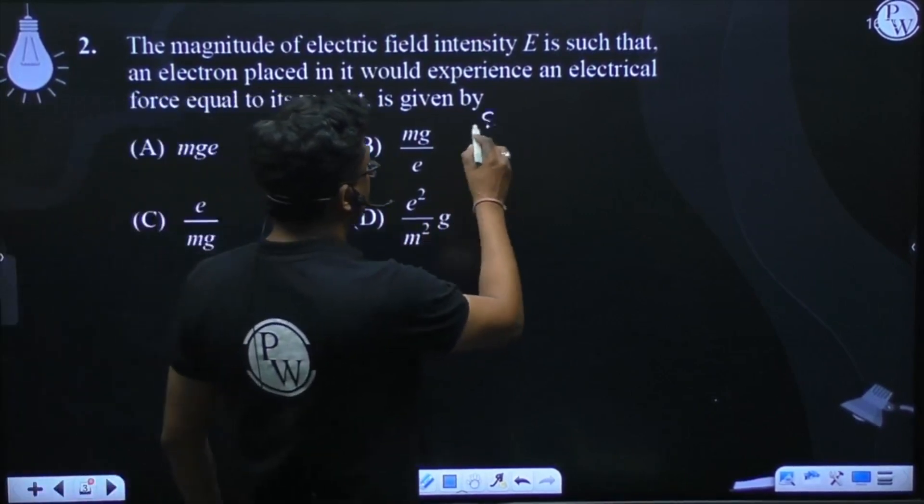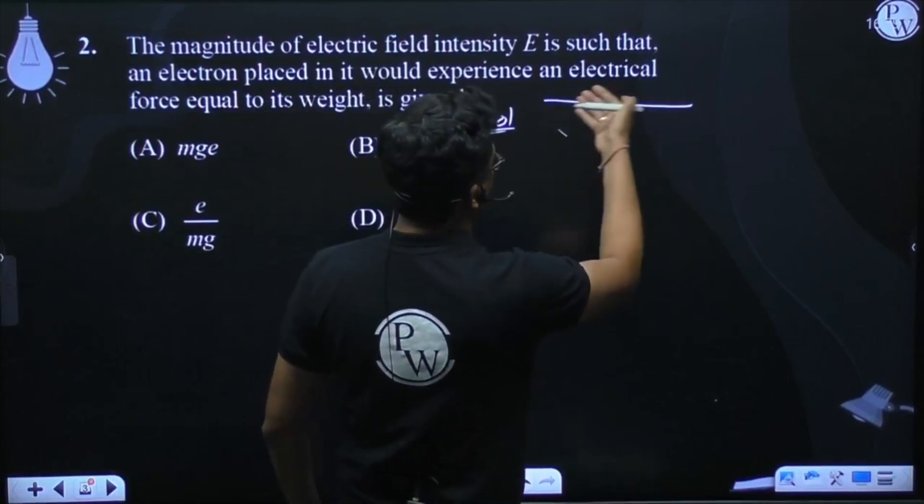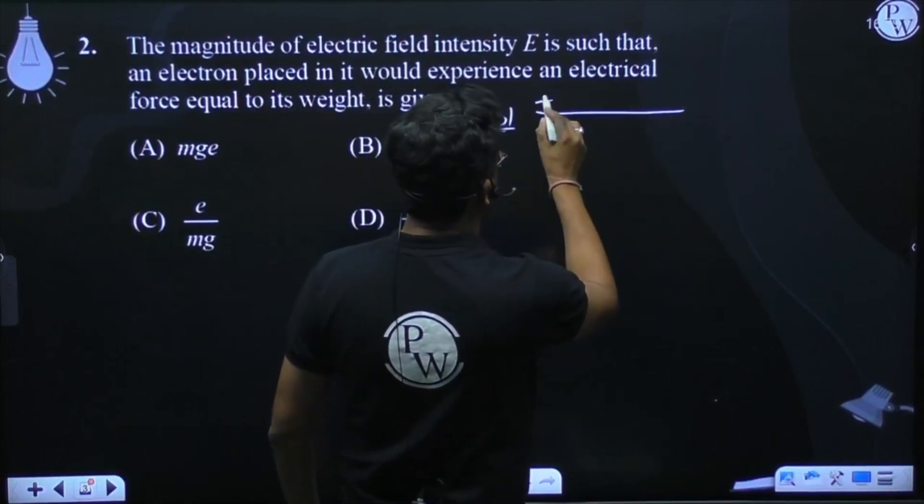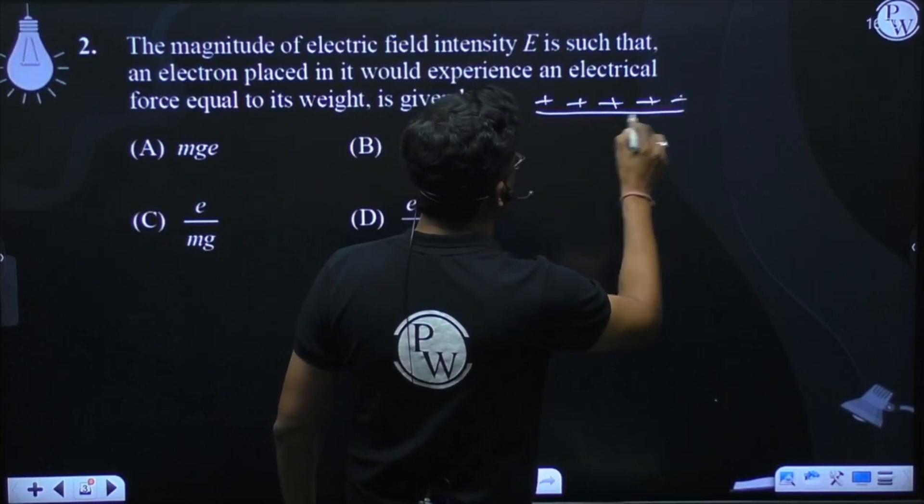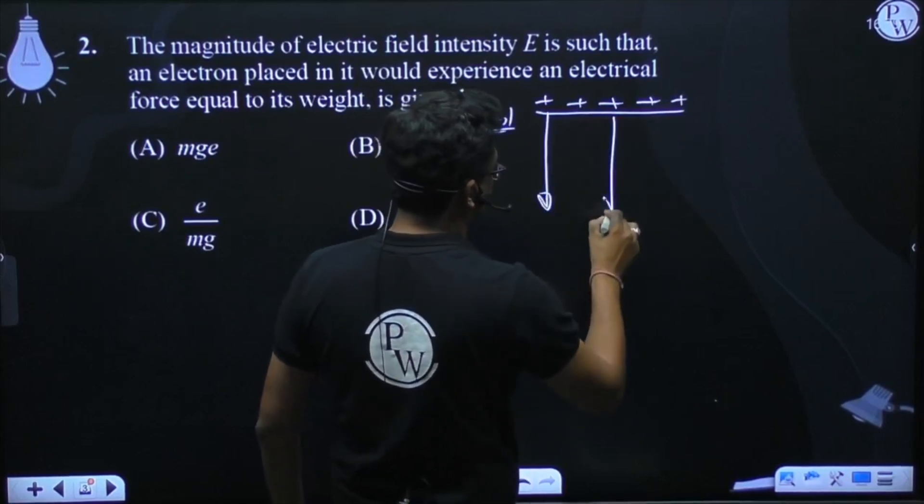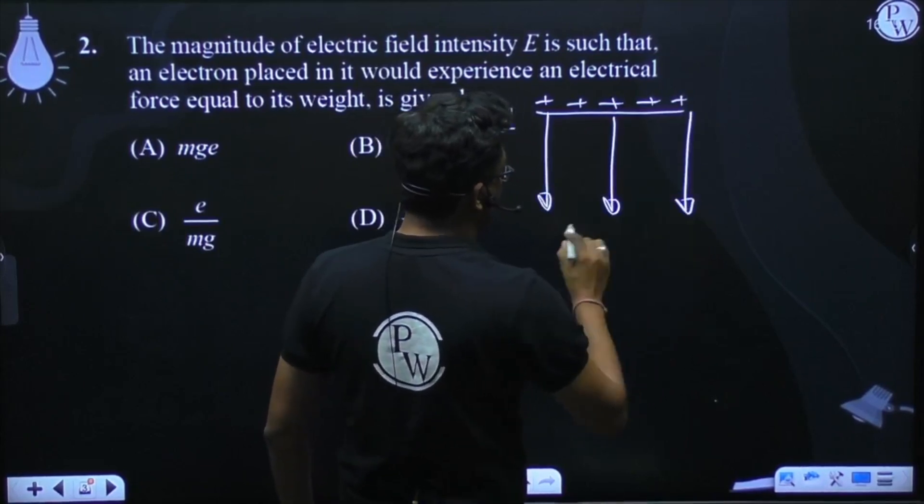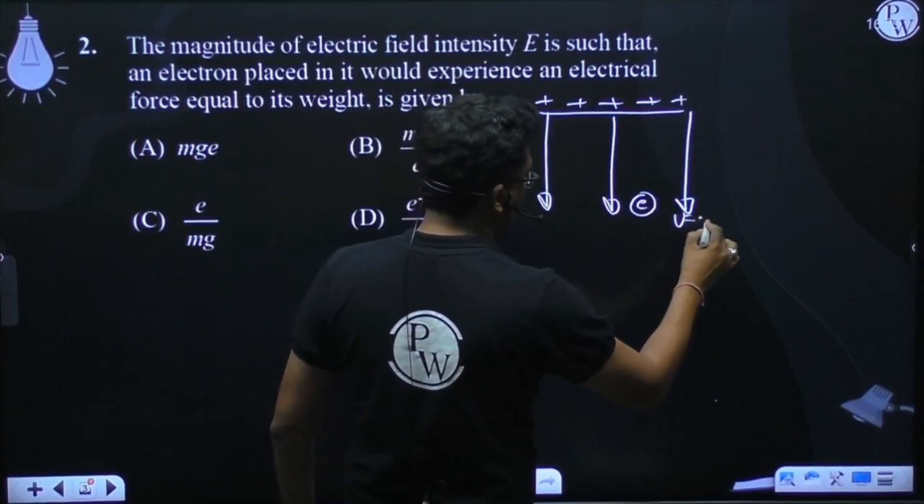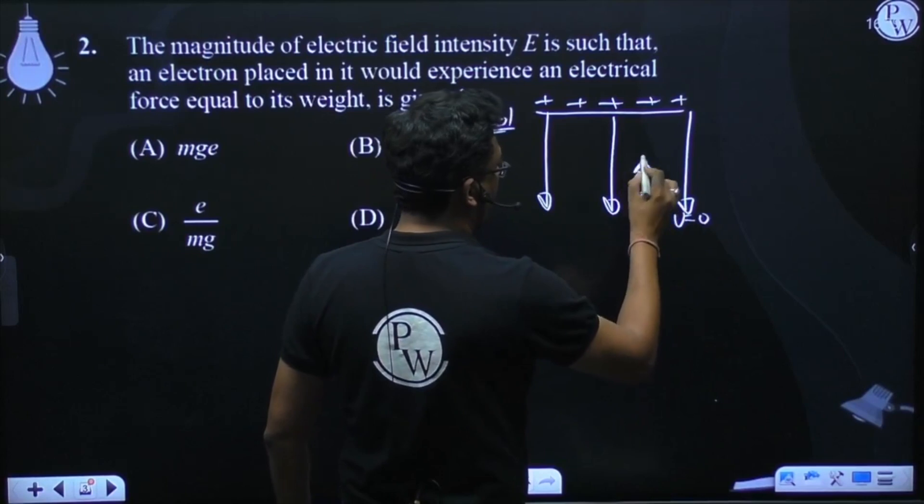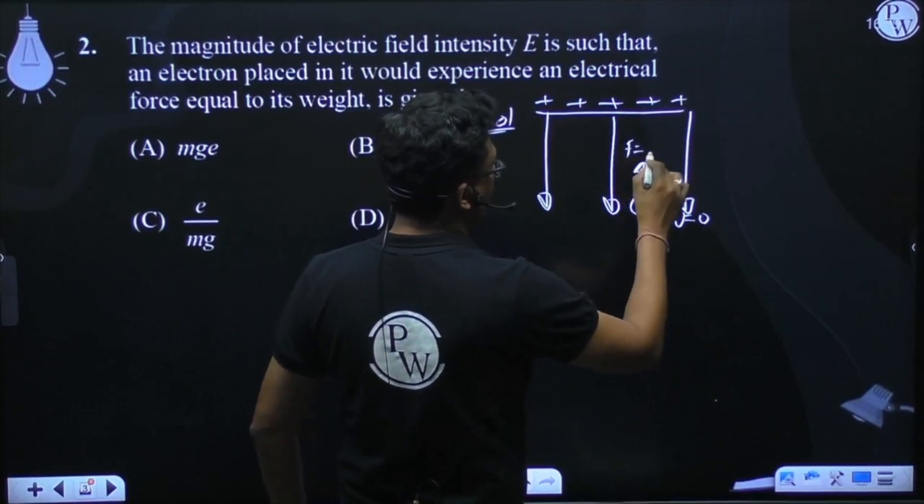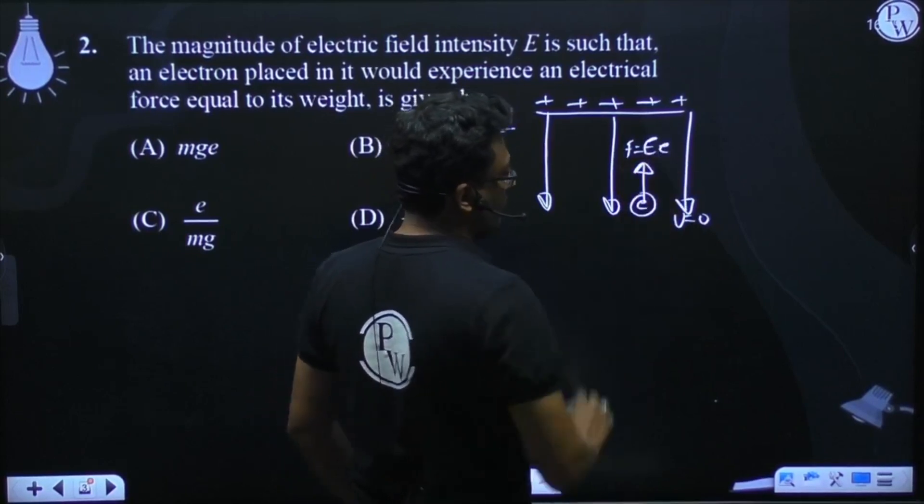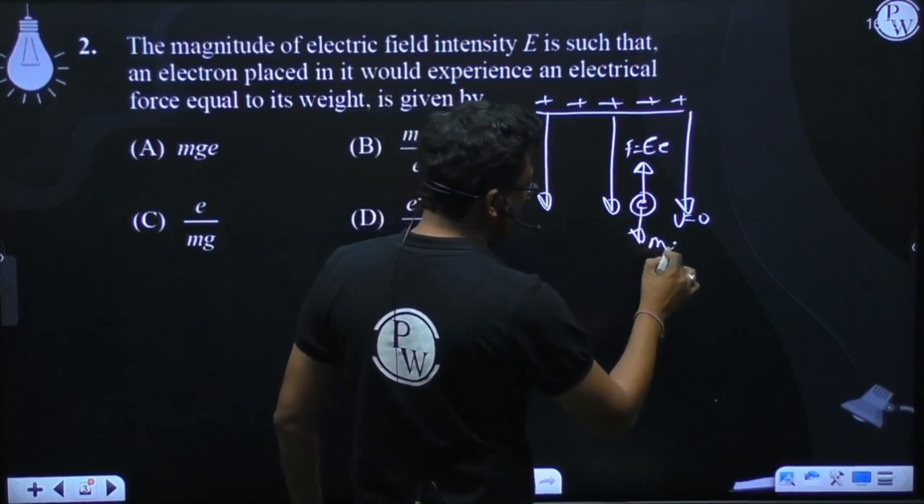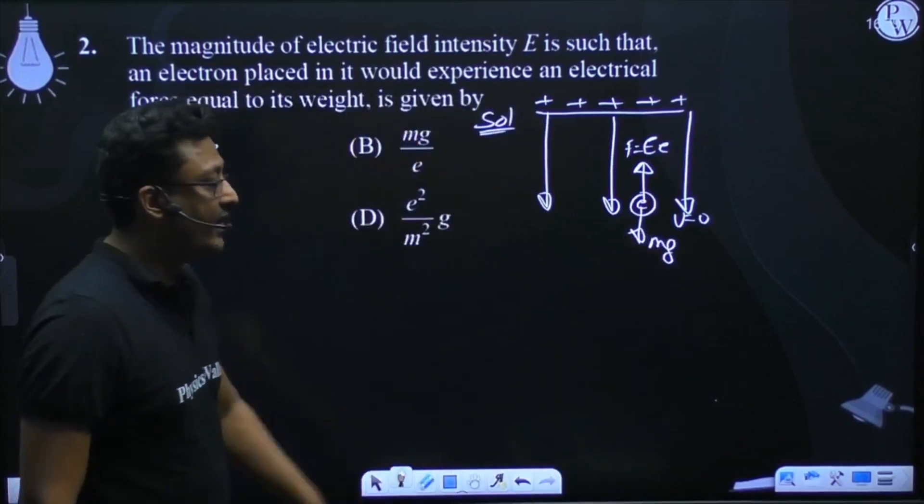So, suppose this is a positively charged plate and the electric field is directed in the downward direction and there is an electron. Initial velocity is 0. It will experience a force and that will be equal to EE. We all know that, and at the same time there will be an MG acting on it in the downward direction.